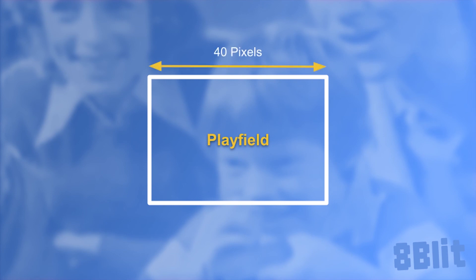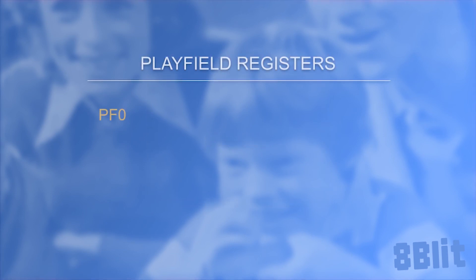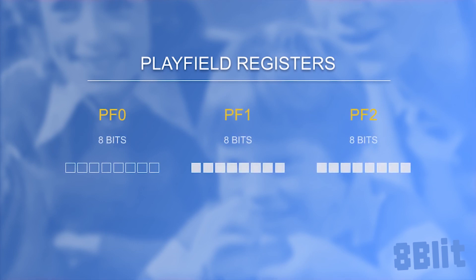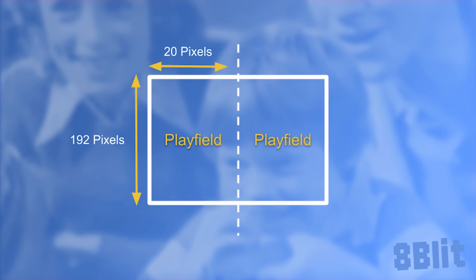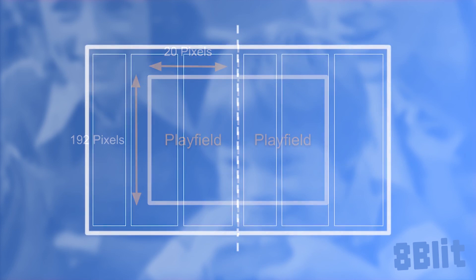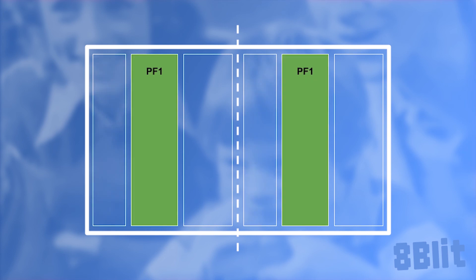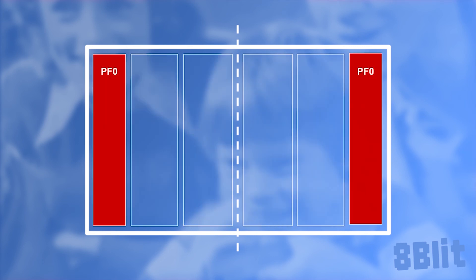The playfield is made up of only 40 pixels spread across three 8-bit registers: PF0, PF1, and PF2. PF1 and PF2 use all 8 bits, while PF0 uses only the four high bits. Each bit in these registers represents a single pixel. This doesn't add up to 40 bits — 8 plus 8 plus 4 is only 20 — because these registers only represent half of the screen. The other half is just a copy of the first, either oriented the same or reflected.